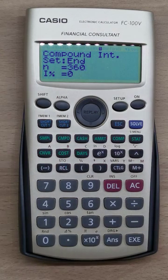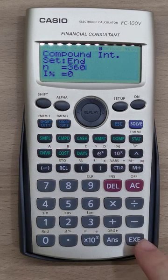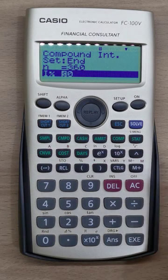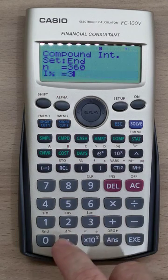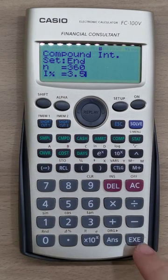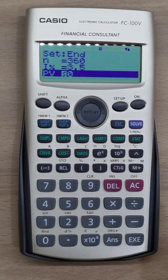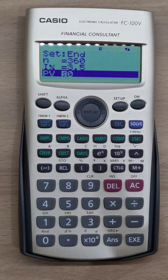The interest rate, if it's at 3.5 percent in my example, 3.5 percent, key accordingly, then press execute. Then the PV - PV stands for the loan amount, which is present value.